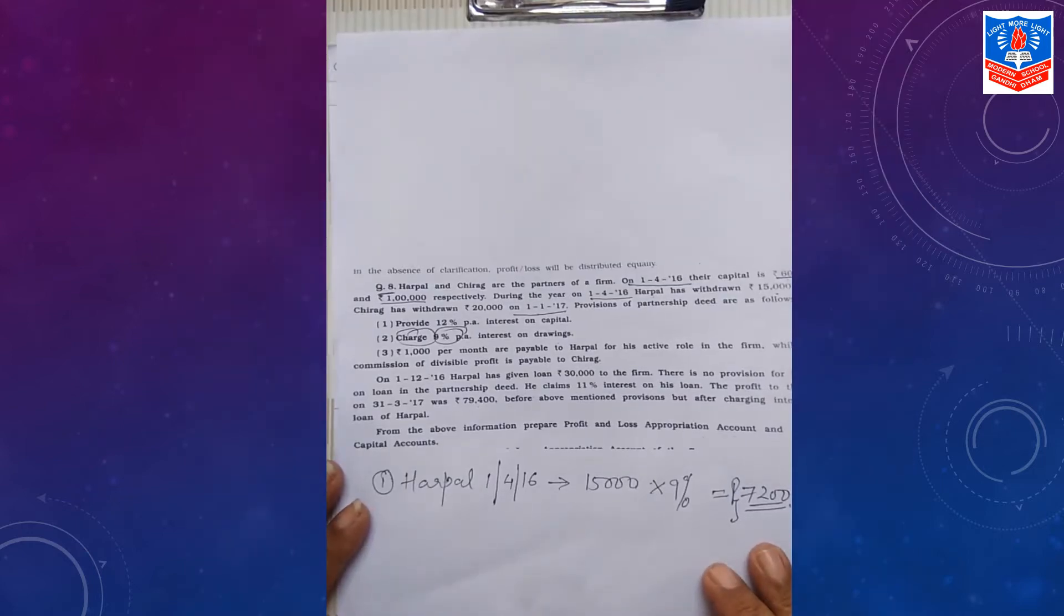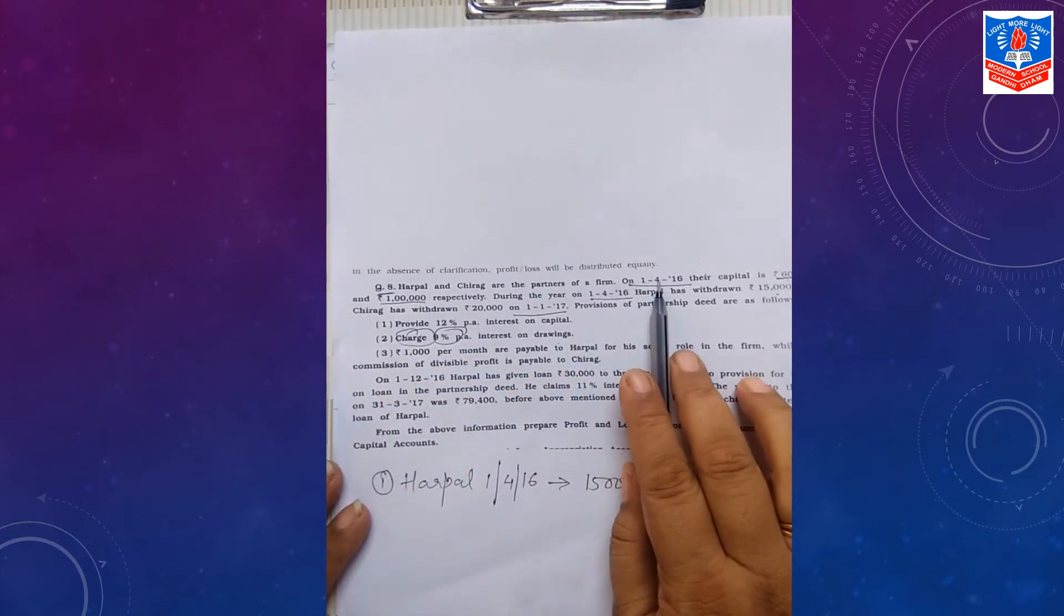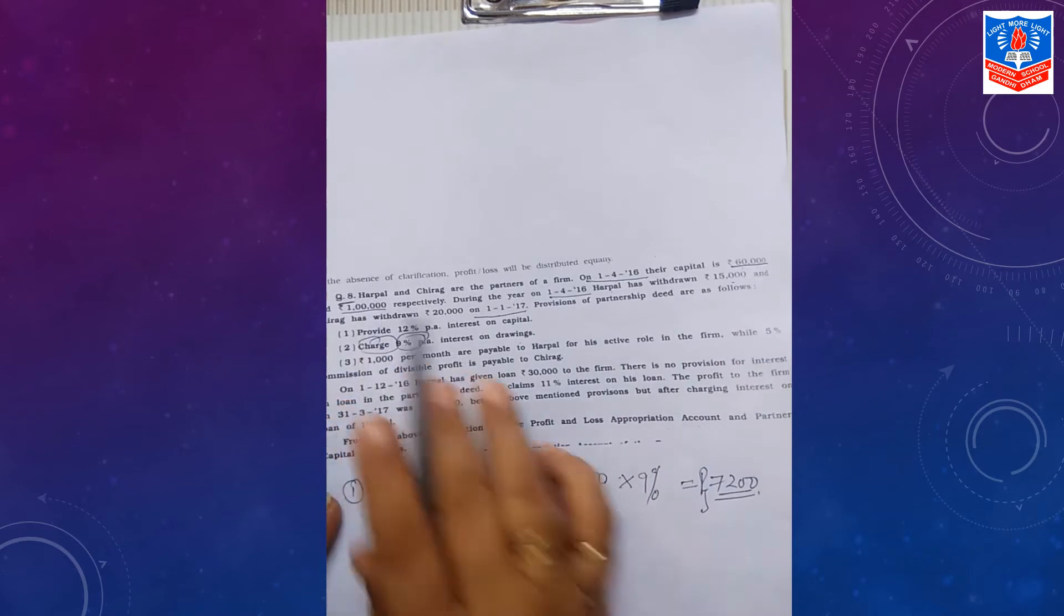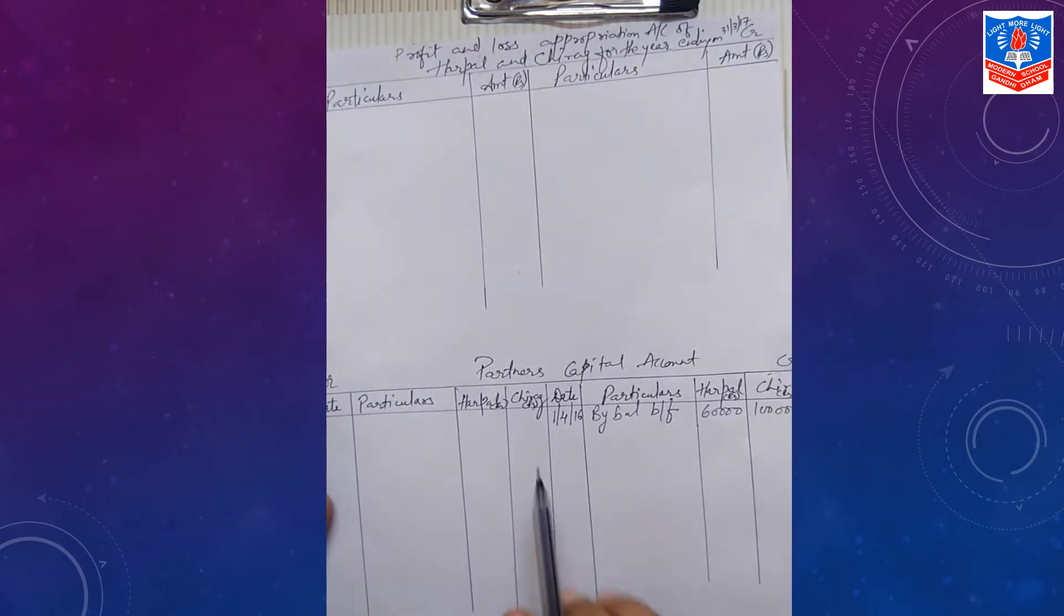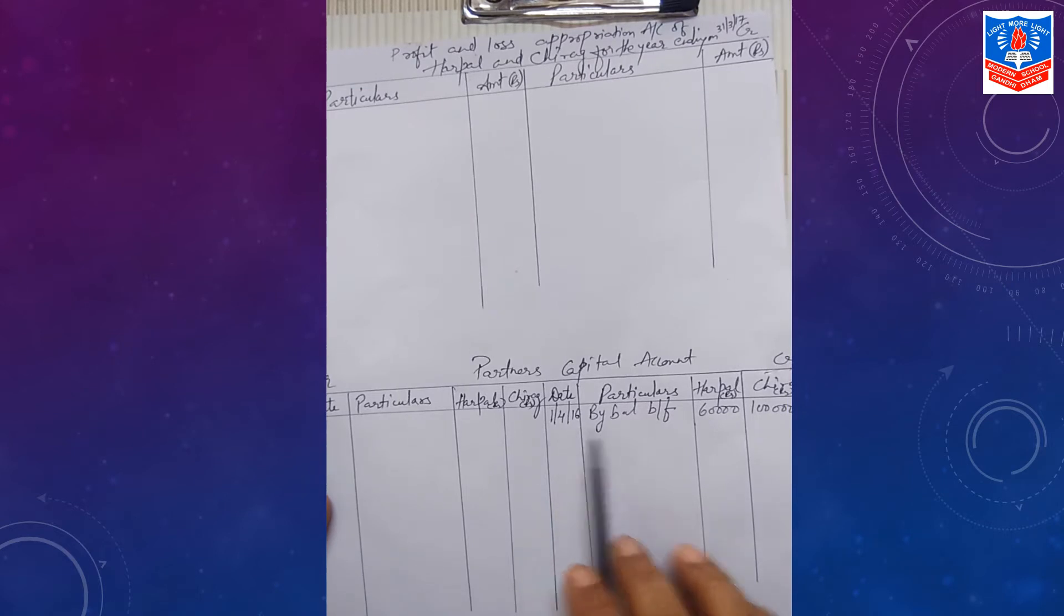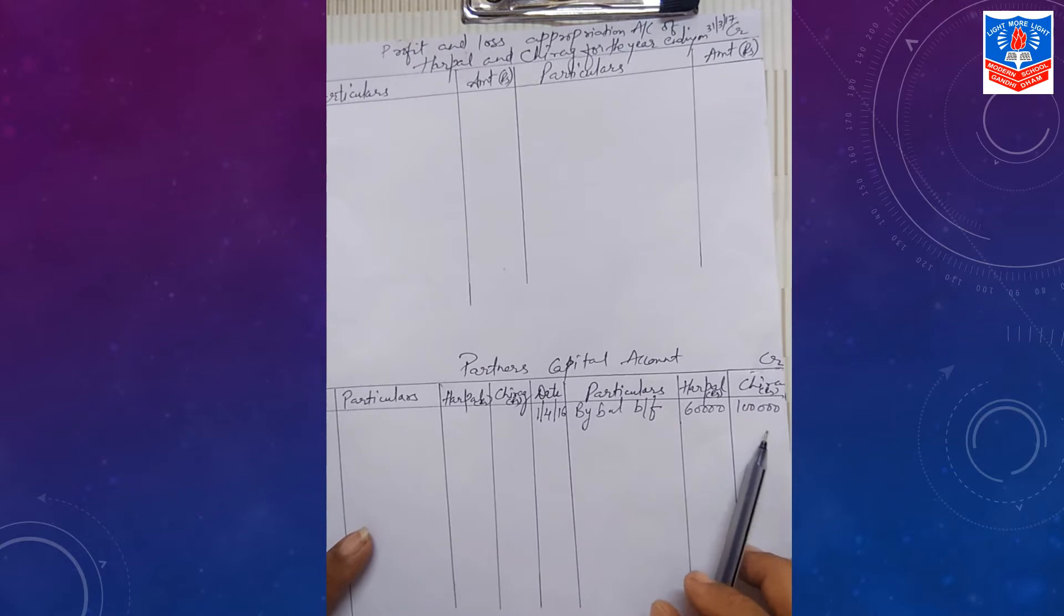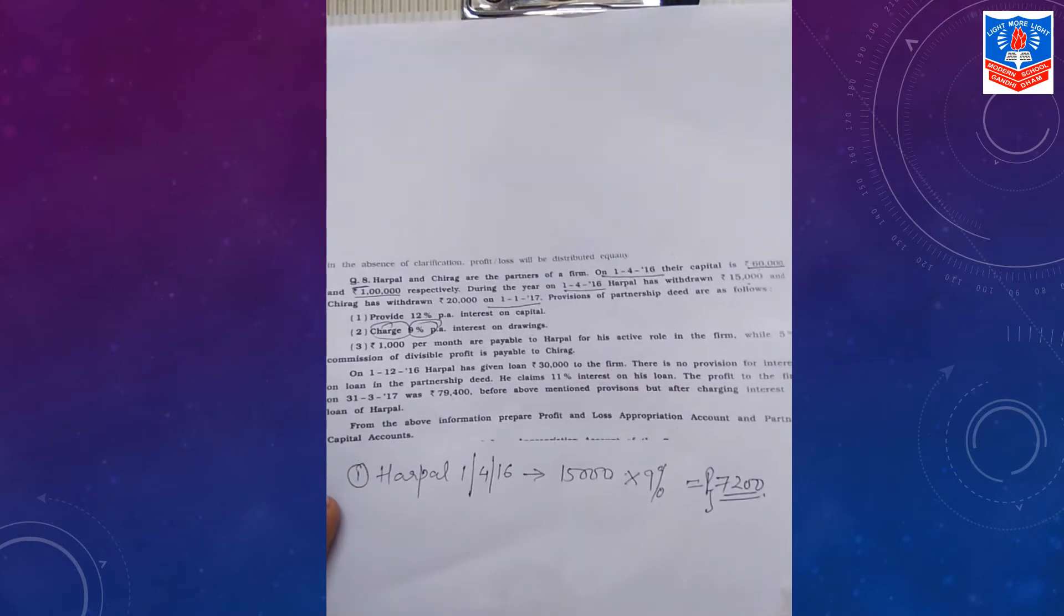Always go with the flow of the question. Two partners on 1st April 2016. Opening balance of capital is given to you Rs. 60,000 and Rs. 1 lakh. We will take this opening balance to partner's capital account. 1st April 2016, by balance brought forward, Rs. 60,000 for Harpal, Rs. 1 lakh for Chirag.